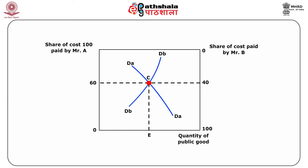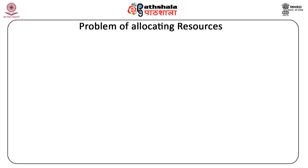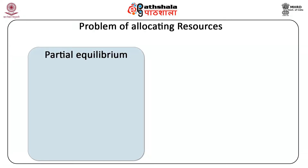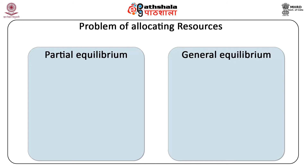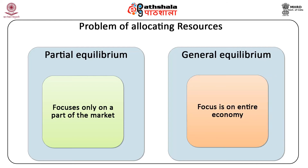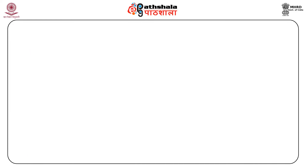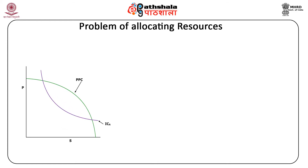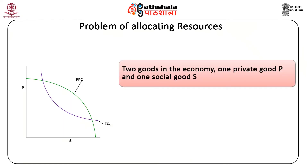It is extremely important to understand the difference between partial equilibrium and general equilibrium. Partial equilibrium analysis focuses only on a part of the market, assuming other things remain the same. Compared to partial equilibrium, general equilibrium is a detailed framework where the focus is on the entire economy. The present analysis is based on the assumption that there are two goods in the economy: one private good P and one social good S, taken on the Y-axis and X-axis respectively.